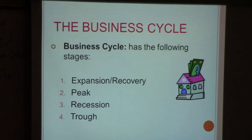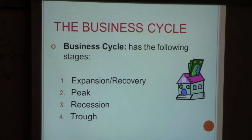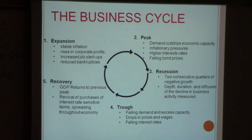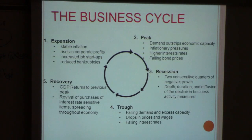Moving on to the business cycle, it has four stages: expansion, peak, recession, and trough. During expansion, you have high corporate profits, increased jobs, reduced bankruptcies, stable inflation, and interest rates that are stable or increasing. In the state of expansion, the economy is doing well, companies are doing well, and people are doing well.